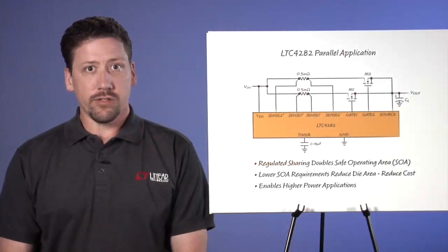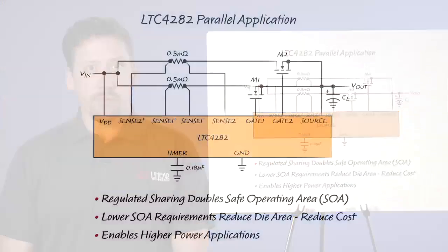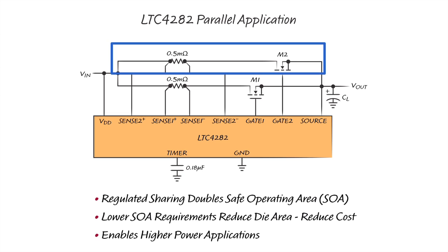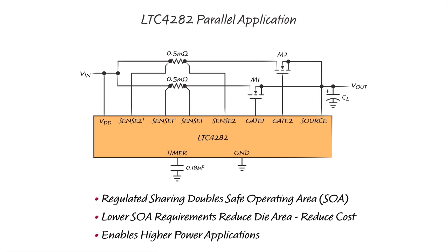The LTC4282 resolves this problem by dividing the MOSFETs into two parallel banks with independent current limits that enforce sharing between the two banks. This method doubles the SOA of an application while using the same number and type of MOSFETs as a traditional solution, allowing the use of MOSFETs with lower SOA. Since SOA is proportional to die area and die area is proportional to price, this leads to significant cost savings.